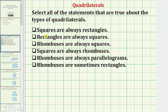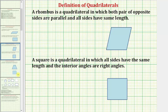The first statement is: squares are always rectangles. Let's begin by reviewing the definition of a square. A square is a quadrilateral in which all sides have the same length and the interior angles are right angles, or measure 90 degrees.